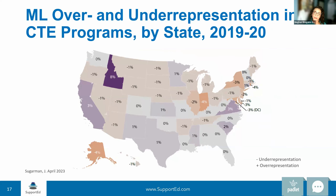Now let's focus on ML representation within CTE programs. This map comes from Julie Sugarman's 2023 report on MLs' equitable access to CTE — the full report is available on our Padlet. As of the 2019-2020 school year, MLs were included in CTE programs at about the same rate as their share of the high school population in most states. In 39 states, the level of over- or under-representation was 1% or less. These findings are encouraging, but the reports don't provide data at the local level, so it's really important to analyze your own district data.